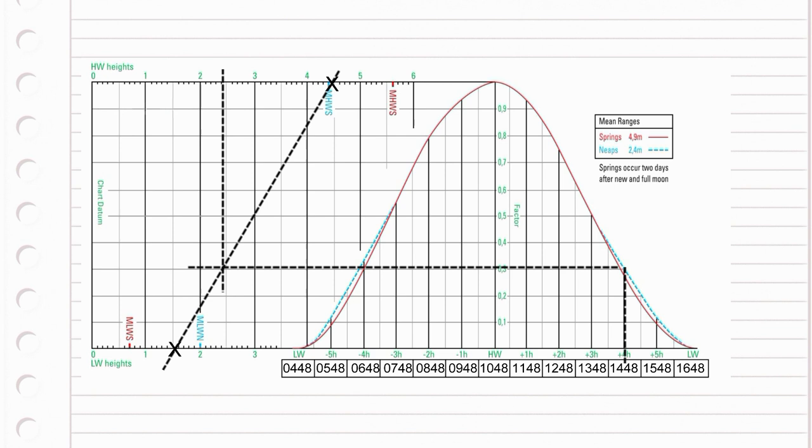Finally, one more line straight up to the scale gives you the height of the tide at your chosen time. If you want to know when the tide will be at a certain height, just do it all in reverse.